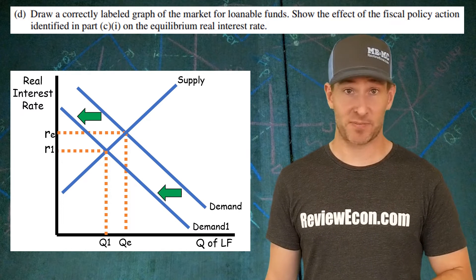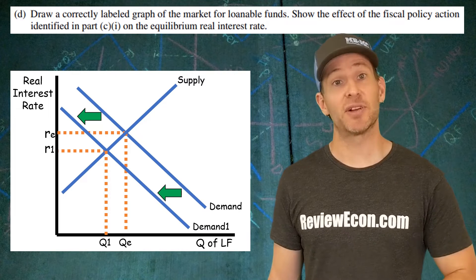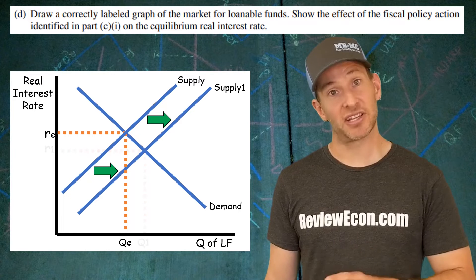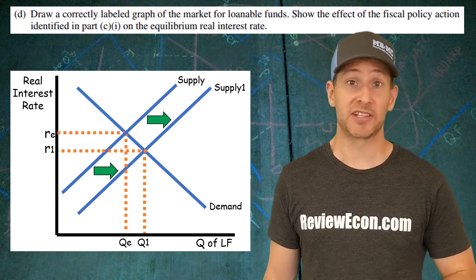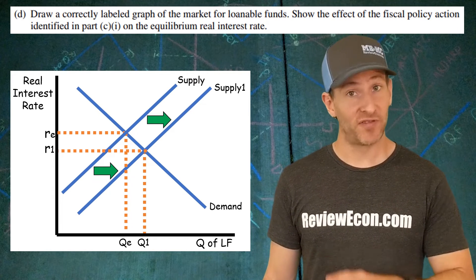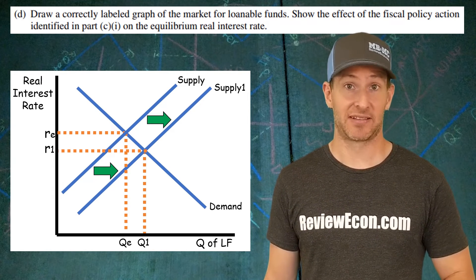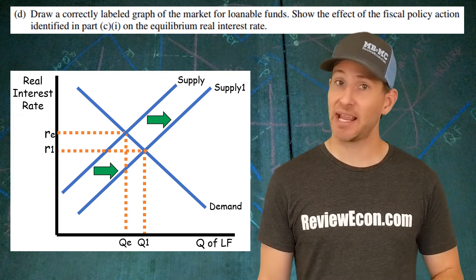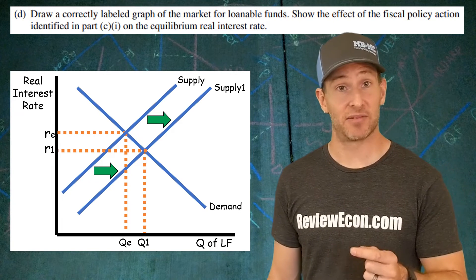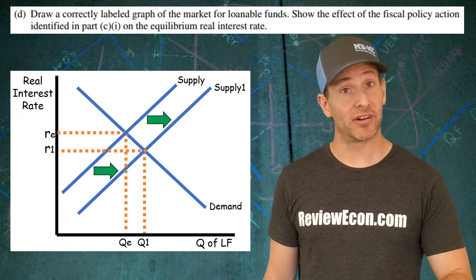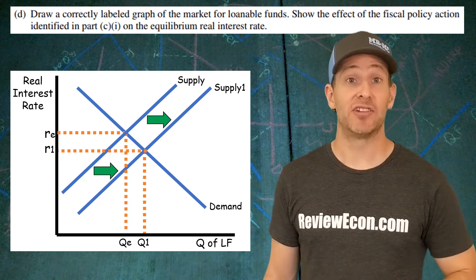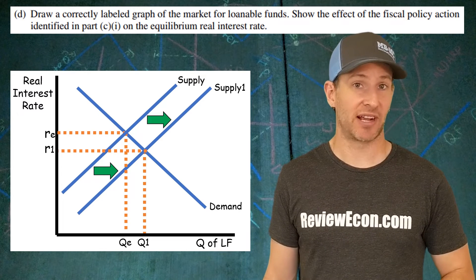There's another way of doing this, and it's perfectly acceptable on the AP exam. Instead of decreasing the demand for loanable funds, you increase the supply of loanable funds. The logic is that since the government isn't borrowing as much money, it leaves more available supply of loanable funds for private businesses. That increase in supply still causes the equilibrium interest rate to go down. So when you draw this out, either decrease the demand or increase the supply. Mark that new lower equilibrium interest rate and you'll get your point.